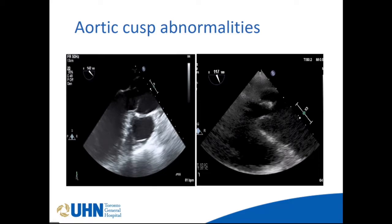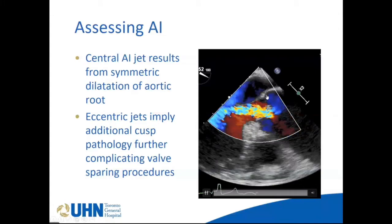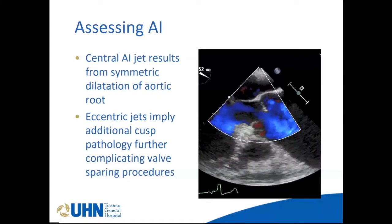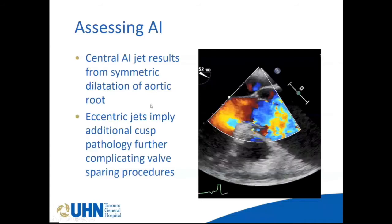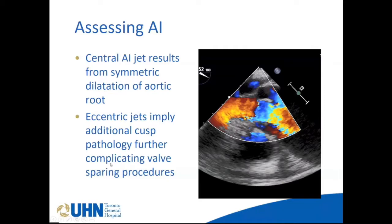Curled-out edges lead to prolapse and eccentric AI, making repair difficult. If the cusps are very thin and stretched, there can be minor perforations, and in those situations repair is usually not done. Regarding AI assessment: a central AI jet is often due to dilatation of the sinus and STJ, altering geometry — this is not problematic. However, eccentric jets imply additional cusp pathology and complicate valve-sparing procedures.